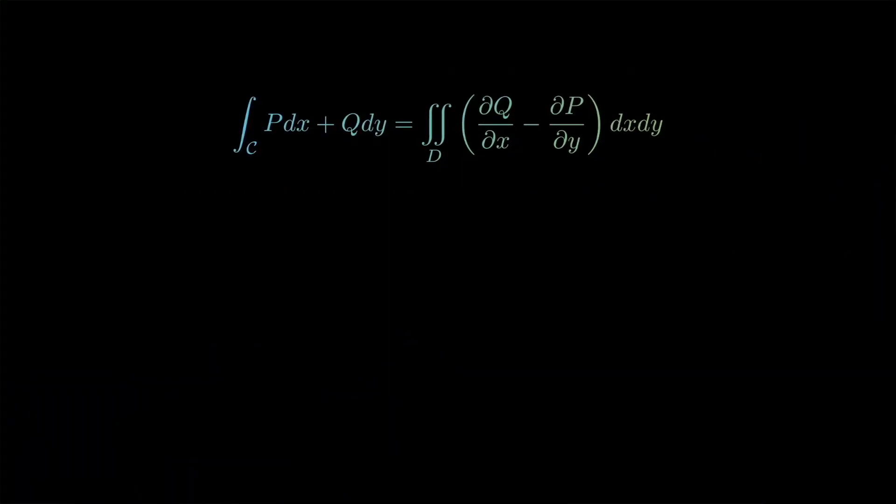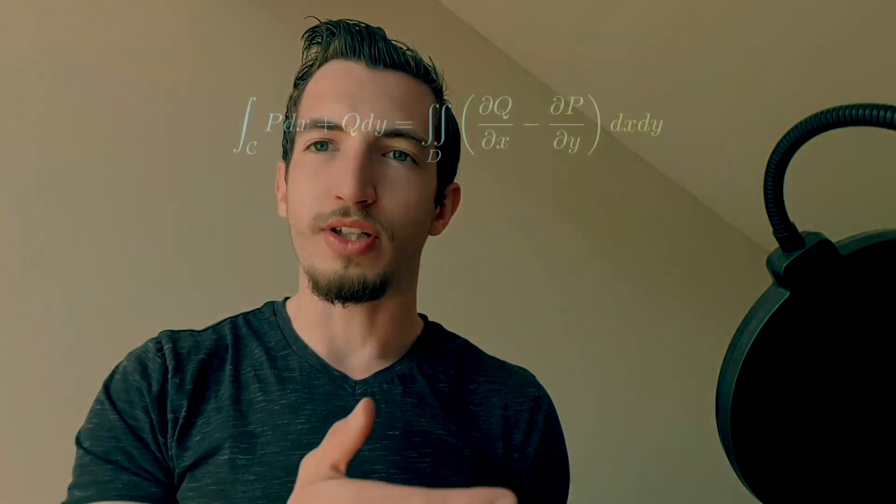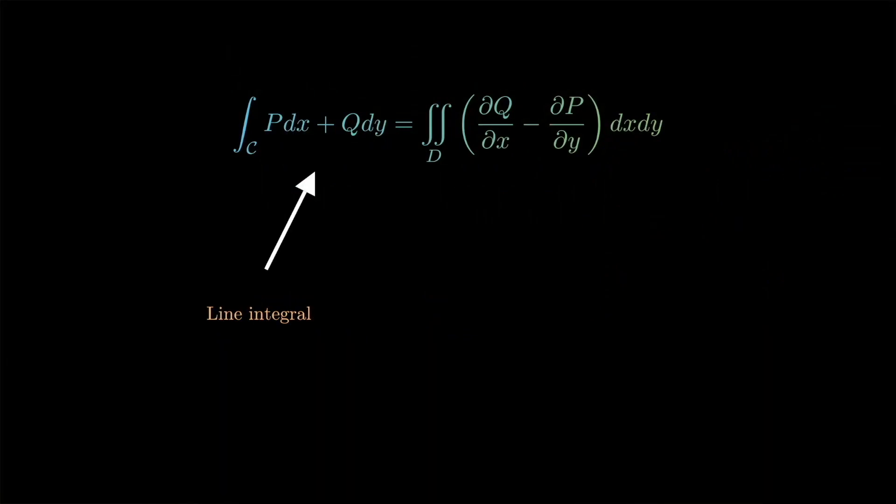In today's video, we want to look at what is in my opinion the right way to view Green's theorem. Green's theorem is this relation on line integrals that we learn about in any vector calculus course. It's very confusing for students — it's not clear at all why there are these minus signs or why you can express a line integral over a curve in terms of a double integral over the region it bounds.